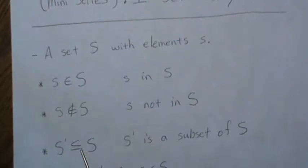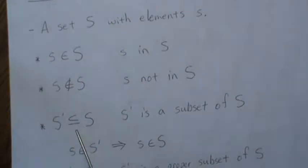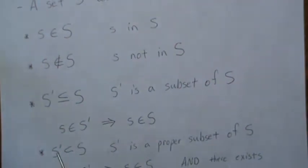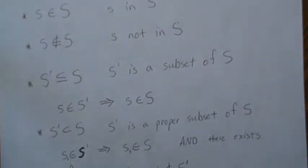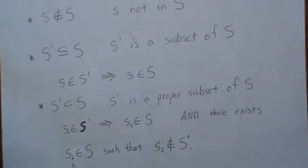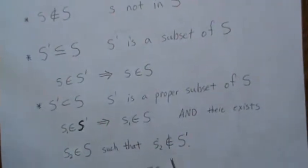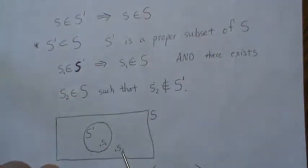They could be equal — that's what the little bar under the subset symbol means. So this means if there's an element in S prime, that implies that element is also in S. This other notation means it's a proper subset: if there's an element in S prime, it's also an element in S, and there exists an element in S that's not in S prime. So it's a proper subset. A picture of that is S as the larger set and S prime inside it.